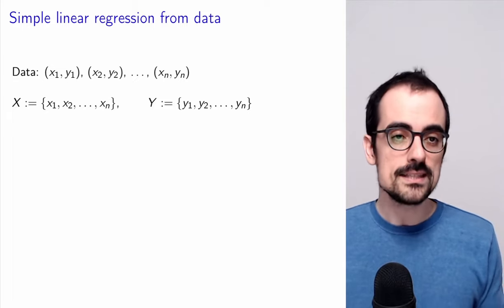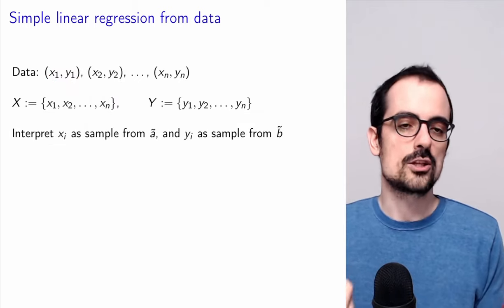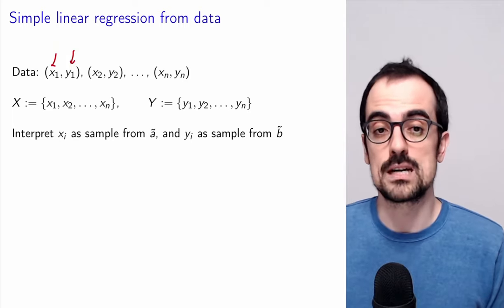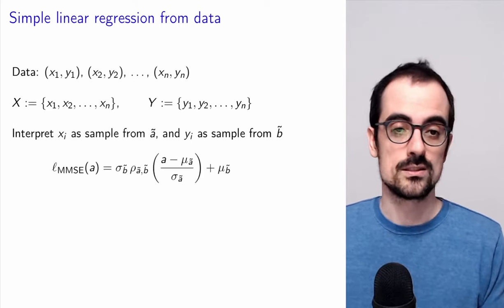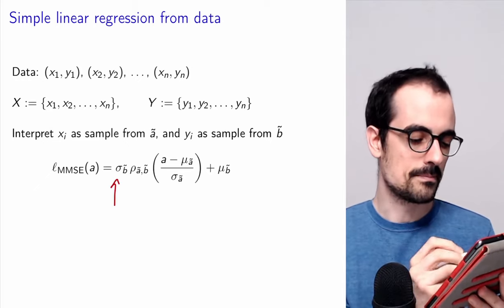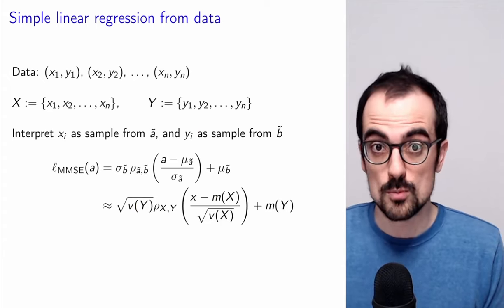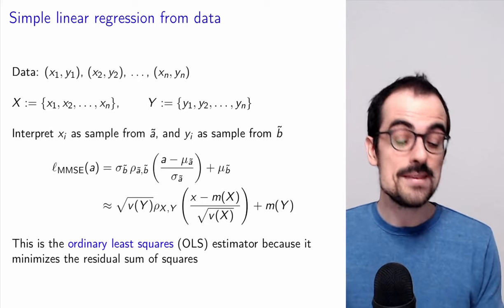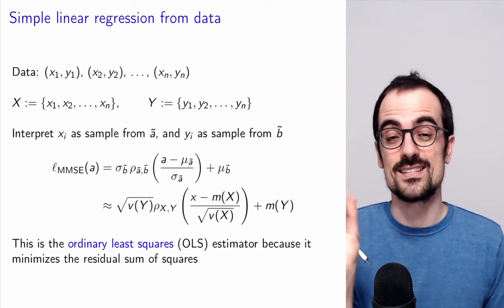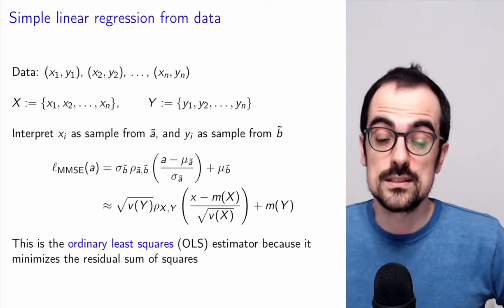What if we want to do simple linear regression from data? We need data points where we observe both the feature and the response. We interpret the feature values as samples from the random variable representing the feature and the response values as samples from the random variable representing the response. We write the linear minimum mean squared error estimate and plug in sample versions of all quantities — sample standard deviations, sample means, and sample correlation coefficient. This expression minimizes the least squares error within the data set, which is why it's called the ordinary least squares estimator.